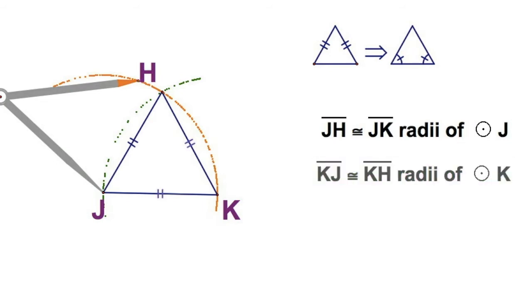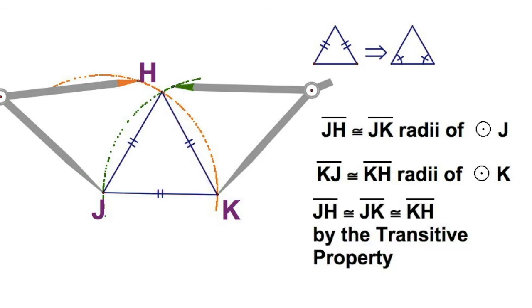JH and JK, this is the radius JH, this is JK. They are congruent because they're both radii of circle J. Now I also know, looking at the green compass, I can see I put the needle on K. JK and HK are also radii of the same arc. And what that's going to tell me, if these two are congruent to each other, and these two are congruent to each other, by the transitive property, all three are congruent. And there's your justification for why that makes an equilateral triangle.